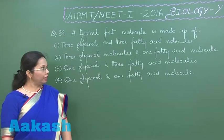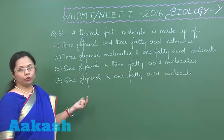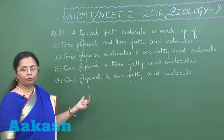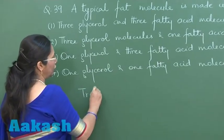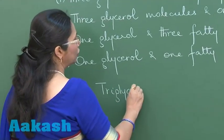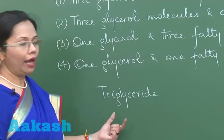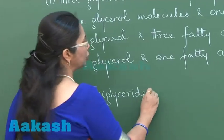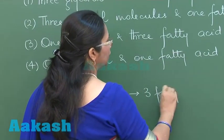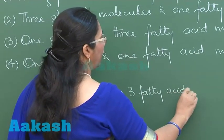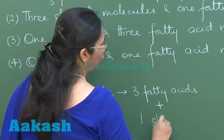Question 39: A typical fat molecule. The typical fat molecule would be a triglyceride, also called triglycerol. This triglyceride is constituted by three molecules of fatty acid and one molecule of glycerol.